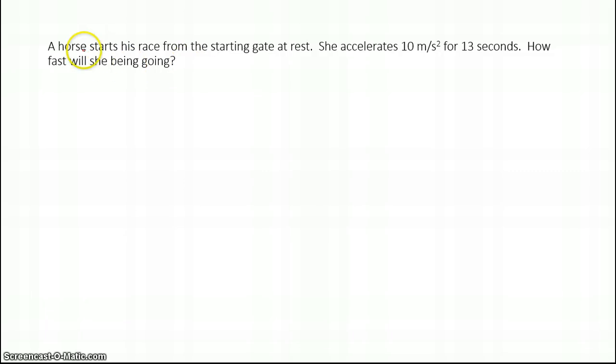For this question, again, we identify what we have. Here are a couple of key words: at rest. As soon as I see at rest, I know it's talking about a velocity, and that velocity is zero meters per second. She accelerates. That key word tells me that this number is acceleration. That's my A value. It also helps because I know it has this square, so that's acceleration as well. And then it says for 13 seconds. Seconds I know is a T value.